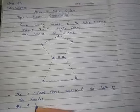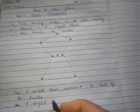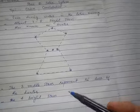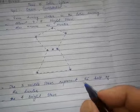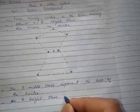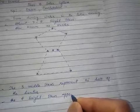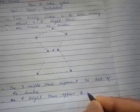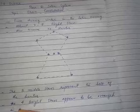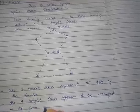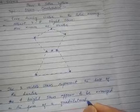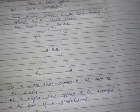Four bright stars appear in the arrangement of a quadrilateral. These four bright stars appear to be arranged in the form of a quadrilateral.